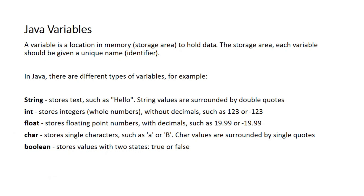For example: string, integer, float, char, and boolean. These data types of variables can hold data. For example, string holds 'hello world'; integer holds numeric values without a decimal part — whole numbers.